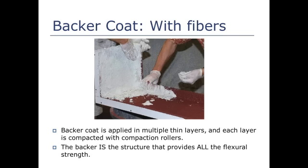The way the backer is applied makes all the difference. Whether it's poured, hand-placed, or sprayed, it's applied in thin layers — usually multiple thin layers — and each layer is compacted using specialty compaction rollers before another layer is added. If you wanted a three-quarter-inch thick slab of GFRC, you would apply it in at least two three-eighths-inch thick layers. The general rule of thumb is that layers can be no thicker than half the fiber length. So if you're using 19-millimeter fibers, each compaction layer should be no thicker than 10 millimeters.